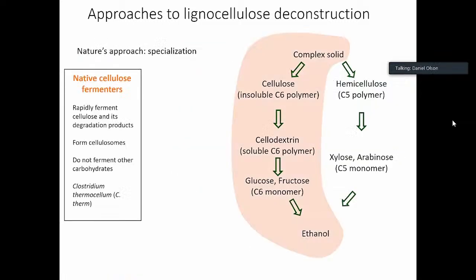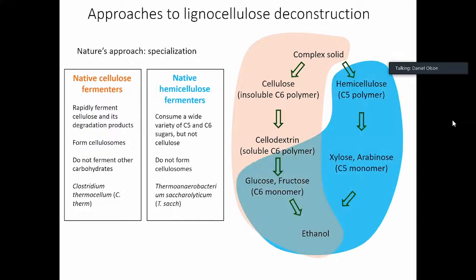If we look at approaches to lignocellulose deconstruction, the way it's done in nature is via specialization. You have one category of organisms which are native cellulose fermenters — these organisms rapidly ferment cellulose and its degradation products, form cellulosomes, and by and large do not ferment other carbohydrates. A classic example is Clostridium thermocellum, which I'll refer to as C-therm. The other type is a native hemicellulose fermenter — these organisms consume a wide variety of C5 and C6 sugars but not cellulose and do not form cellulosomes. A classic example is Thermoanaerobacterium saccharolyticum, which I'll refer to as T-sac.